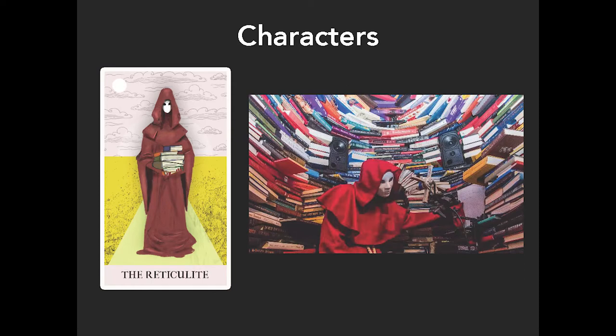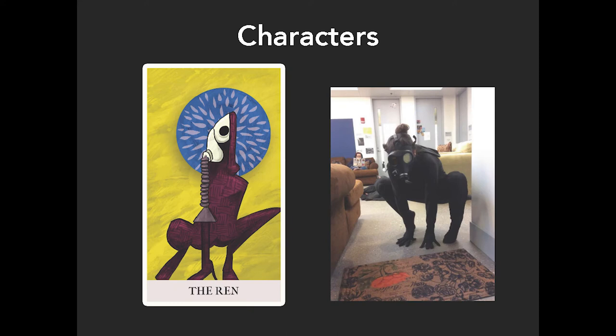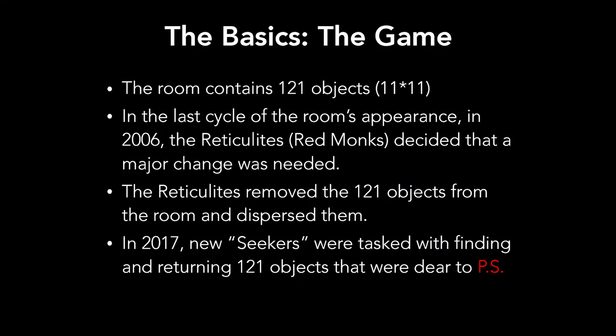In the midst of this, we had many characters — red monk characters called the reticulites, students playing characters, and slightly more creepy characters in sensory deprivation suits. The basics of the game involved finding 121 objects hidden all around Hyde Park and Chicago. The story said that in the last time the room had appeared in 2006, the red monks had removed the 121 objects, and players had to find them, reconstitute them, and bring them to the room to activate it. The incoming players came to be known as seekers.